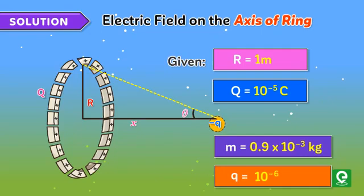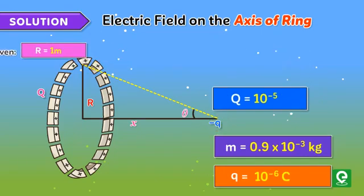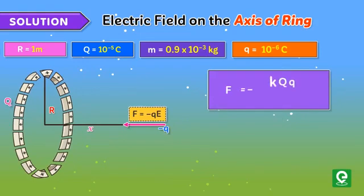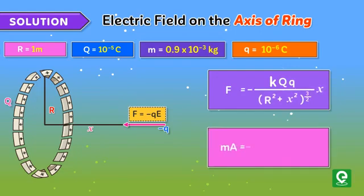Therefore, the force acting on the negative charge q will be F = qE. Hence F = -kQqx/(R² + x²)^(3/2), where a is the acceleration of the particle.